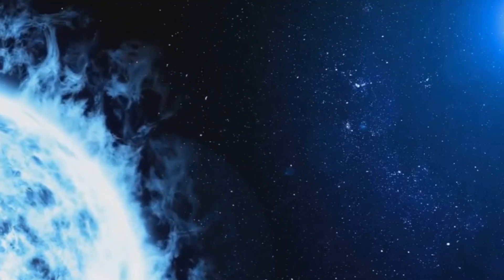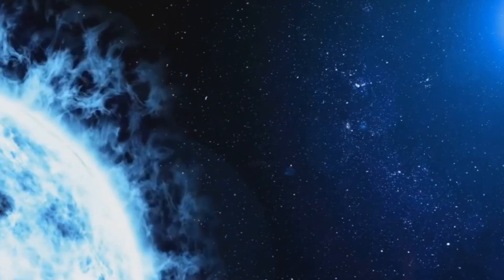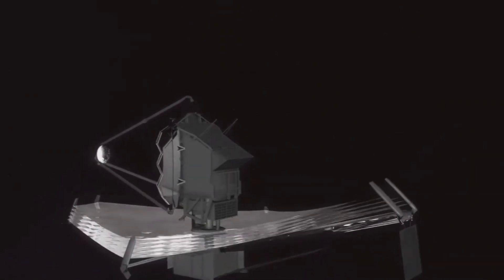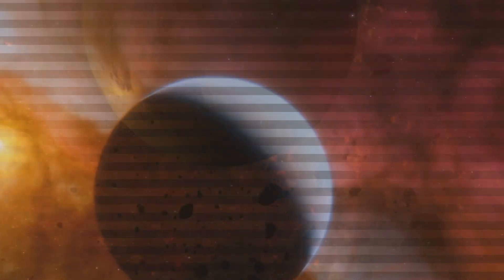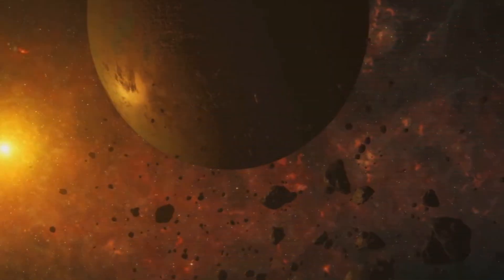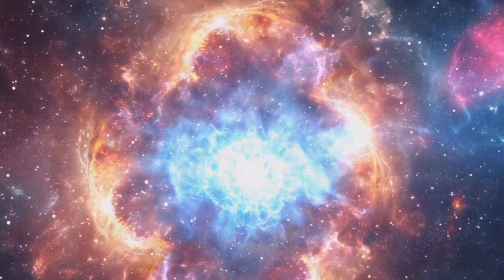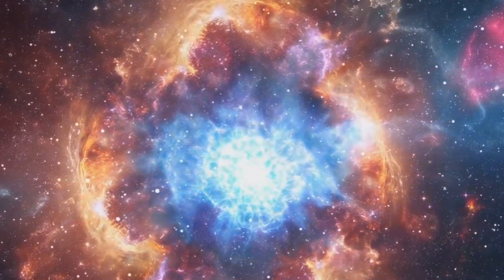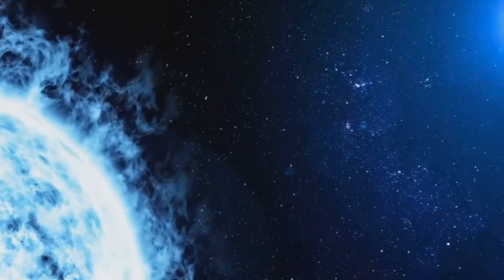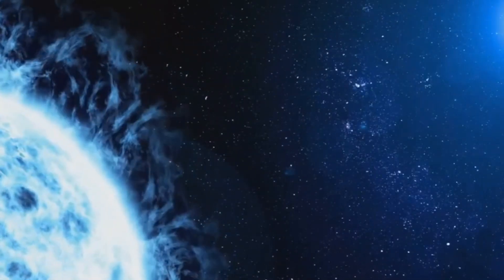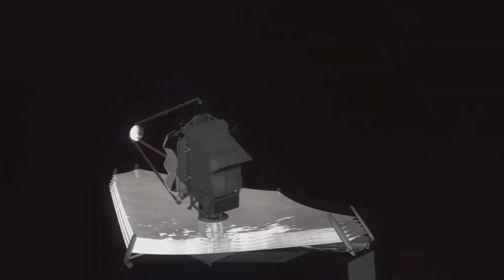This nuanced view has implications not just for understanding the fates of exoplanets, but also for projecting the long-term future of our own solar system. While Earth is not expected to face such a fate anytime soon, scientists estimate that in about 5 billion years, the Sun will expand into a red giant, possibly swallowing Mercury and Venus and potentially Earth, depending on orbital dynamics at the time.